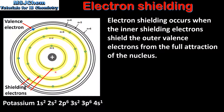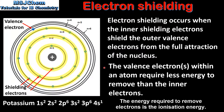The electrons in the first 3 main energy levels — n=1, n=2, and n=3 — are known as shielding electrons. These electrons shield the valence electron from the full attraction of the nucleus. Because of this shielding effect, the valence electrons within an atom require less energy to remove than the inner electrons.